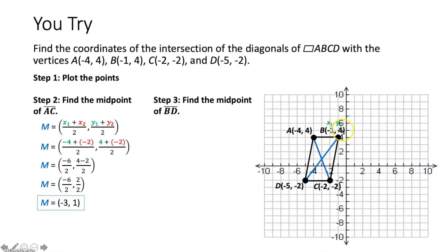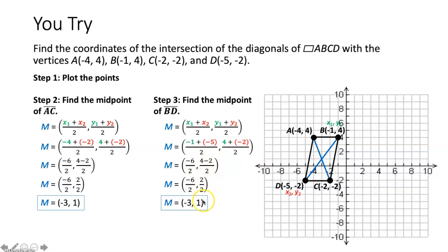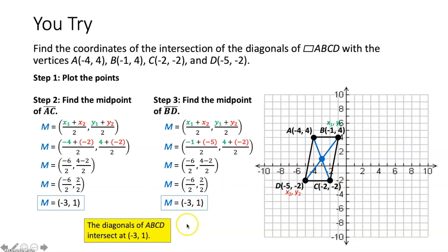Now we check segment BD. Negative 1 plus negative 5 is negative 6, and 4 plus negative 2 is 2. Negative 6 over 2 is negative 3, and 2 over 2 is 1. Both diagonals have a midpoint of (−3, 1), confirming the diagonals bisect each other. The intersection of the diagonals is (−3, 1).